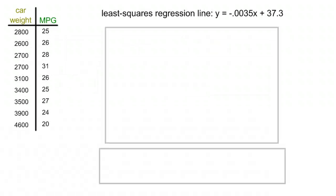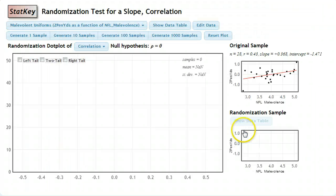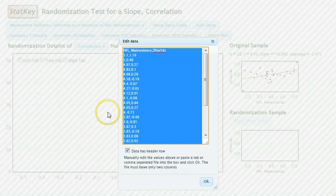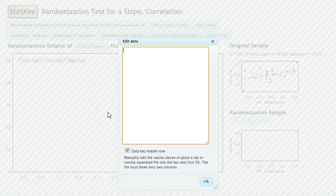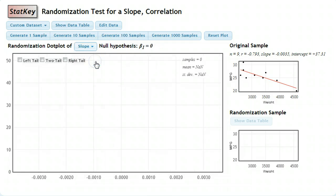And to check that, we set up a randomization test in StatKey. We're going to use the same set of data here. So we go to the test for the slope under randomization. The first thing I'm going to do is edit my data. I can control A to highlight all of the data in the table and delete what's in there. I have my own data ready to paste in, so I control V to paste that in. Just like when I did confidence intervals, I'll change this correlation over to slope.